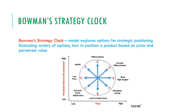Bowman's Strategy Clock is a model that explores the options for strategic positioning, including a variety of options and how to position a product based on its price and perceived value. On the bottom axis you have price, and up the side you have perceived value to the consumer.